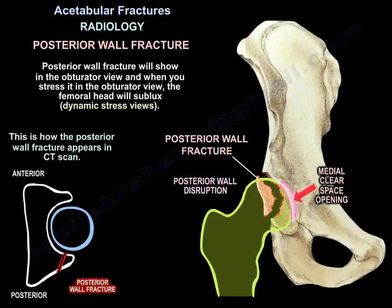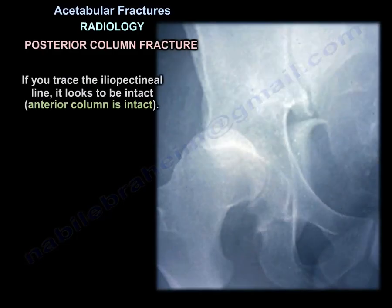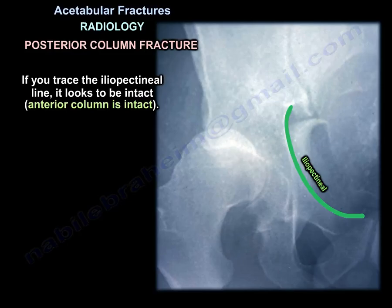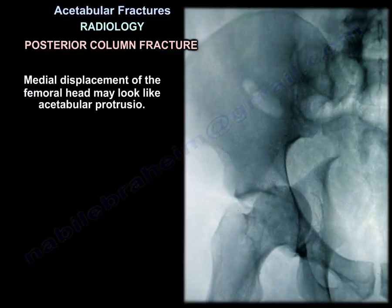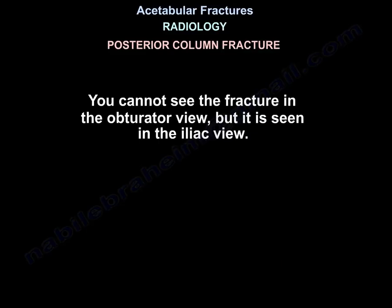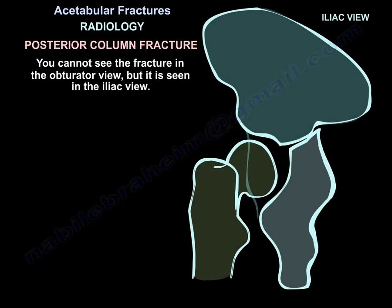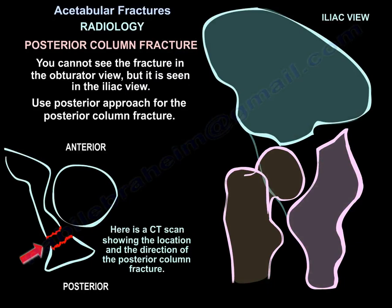This is how a posterior wall fracture appears on CT. For a posterior column fracture, if we trace the iliopectineal line and it looks intact, the anterior column is intact. If we trace the ilioischial line and it looks interrupted, the posterior column is fractured. Medial displacement of the femoral head may look like acetabular protrusion. You cannot see the fracture in the obturator view but you see it in the iliac view. The CT scan shows the location and direction of the posterior column fracture, and you would use a posterior approach.